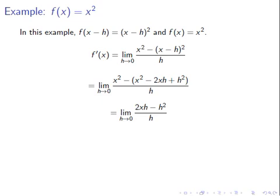Notice that 2xh minus h squared over h is not defined at h equals 0, but there is a removable discontinuity at h equals 0. We remove that discontinuity by simplifying: this equals the limit of 2x minus h as h approaches 0. As h approaches 0, h goes to 0, so we're left with 2x.